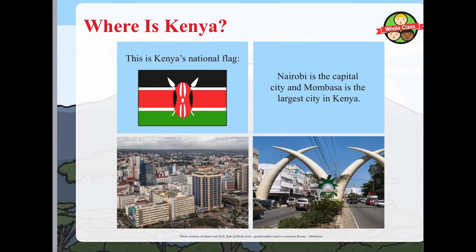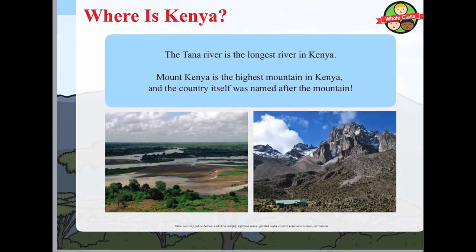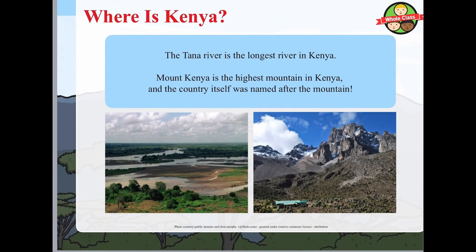This is Kenya's national flag. Nairobi is the capital city and Mombasa is the largest city - I think Mombasa is on the coast, it's a port city. The Tana River is the longest river in Kenya. Mount Kenya is the highest mountain, and the country itself was named after the mountain - they didn't call the mountain after Kenya, the mountain was already called Mount Kenya and they named the country after it.